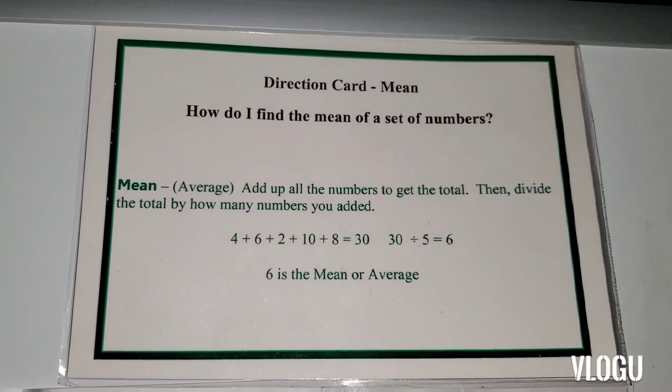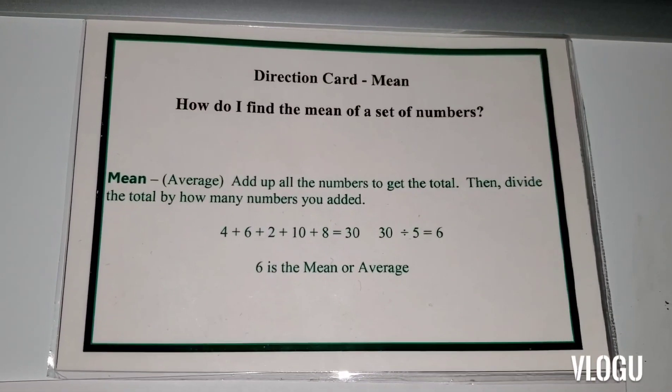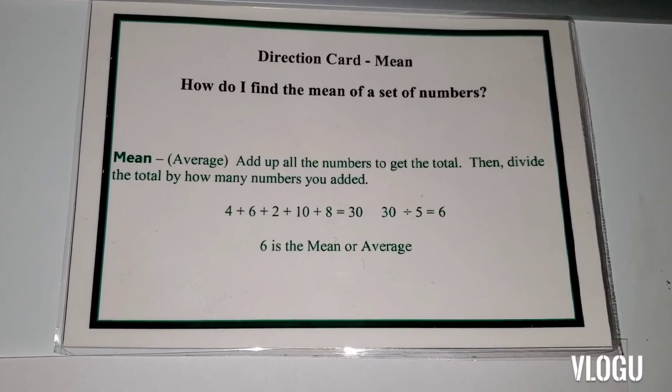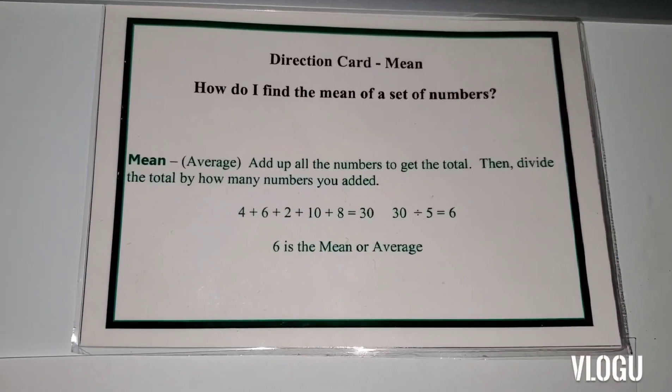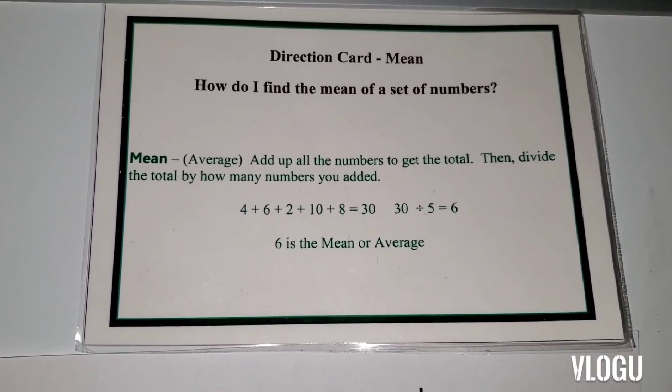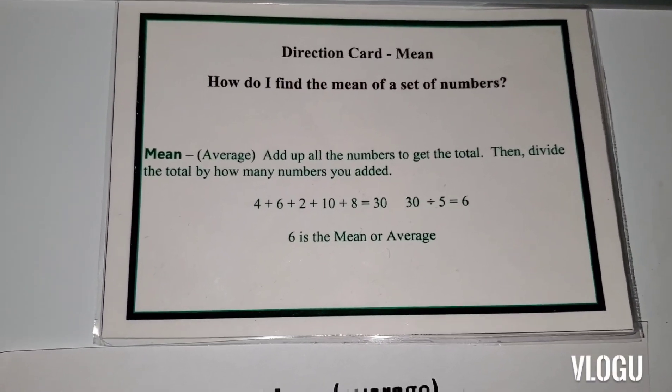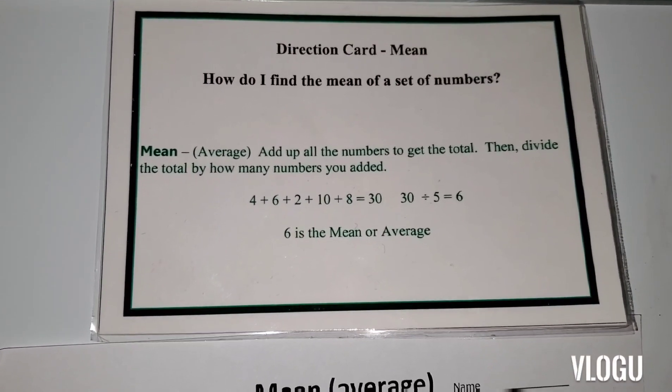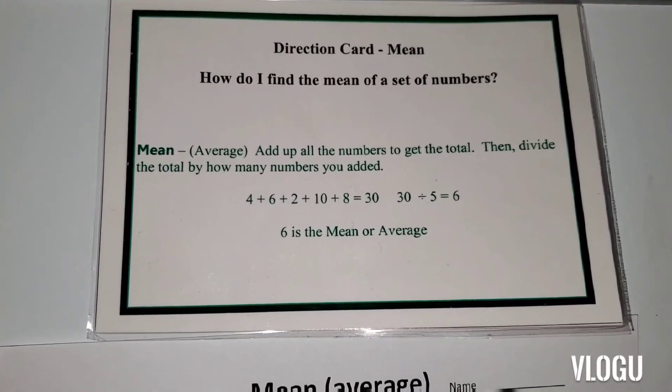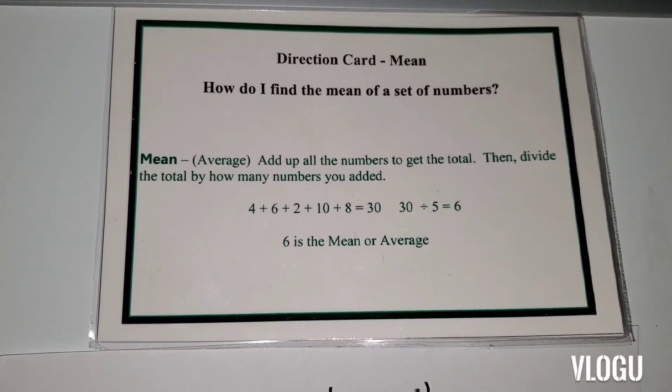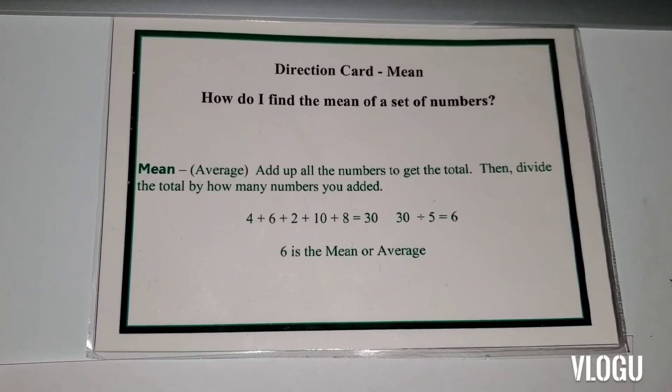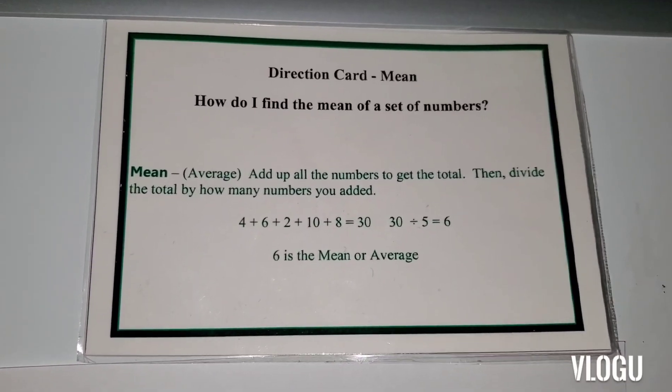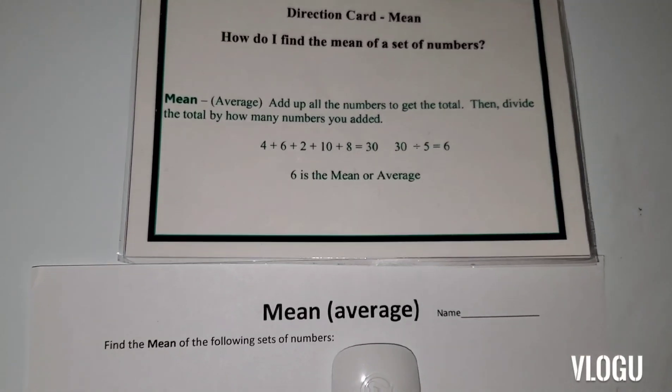So, just to review, to find the mean of a set of numbers, add up all the numbers to get the total. Then, divide the total by the number, by however many numbers you added. So, in 4 plus 6 plus 2 plus 10 plus 8 equals 30. Five numbers were added together. You take your 30, divide by 5. The answer is 6. So, 6 is the mean or average. I do note that this is not put in numerical order with a set brackets around it. Please excuse that, but you should do it with yours.